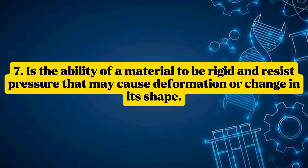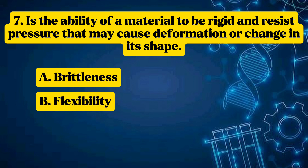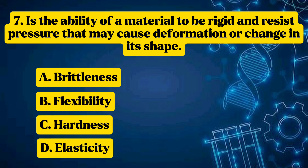Question 7: It is the ability of a material to be rigid and resist pressure that may cause deformation or change in its shape. Options: A — brittleness, B — flexibility, C — hardness, D — elasticity. Answer: C — Hardness.